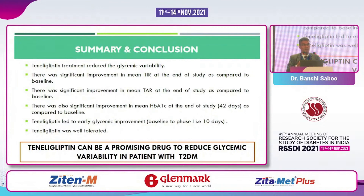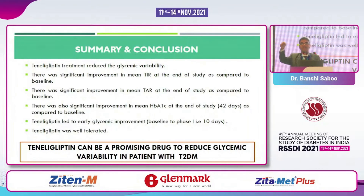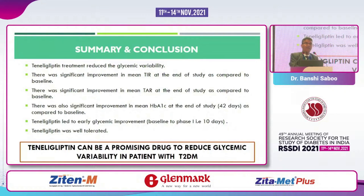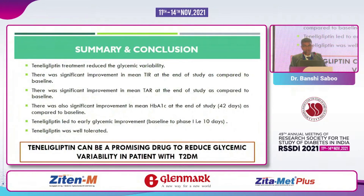Teneligliptin led to early glycemic improvement — even from baseline to Phase 1 we saw significant benefit. In the first four days patients were on metformin only with CGM running; on Day 5 teneligliptin was introduced, and within 10 days we saw a significant improvement in time in range. Teneligliptin was well tolerated and is a promising drug to reduce glycemic variability in type 2 diabetes. It adds to existing glyptin data and shows improvement in time in range with significant A1c reduction. I thank Glenmark for supporting this study and this talk at RSSDI. Thank you.